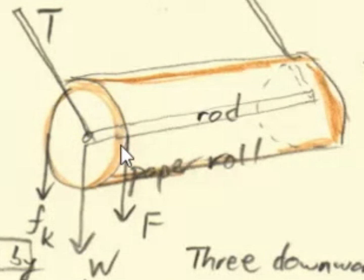As the paper, the force F applies to try to turn the roll of paper, it also pushes against the wall.